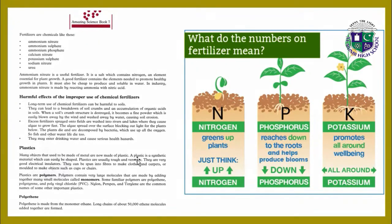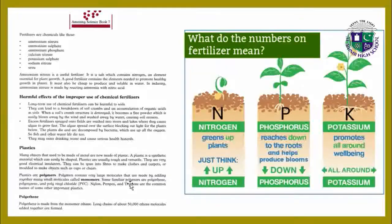Plastics: many objects that used to be made of metal are now made of plastic. A plastic is a synthetic material which can easily be shaped. Plastics are usually tough and versatile; they are very good electrical insulators. They can be spun into fibers to make clothes and carpets, or molded to make objects such as cups or chairs. Plastics are polymers. Polymers contain very large molecules made by adding together many small molecules called monomers. Some familiar polymers are polythene, polystyrene, and polyvinyl chloride (PVC), nylon, Perspex, and Trilene.